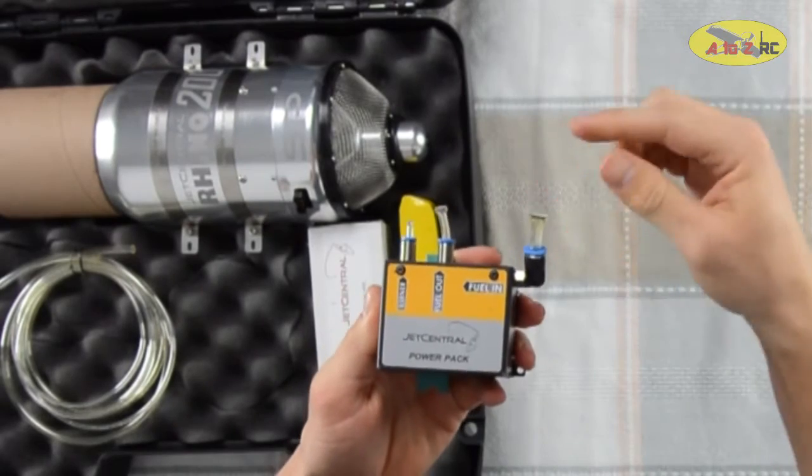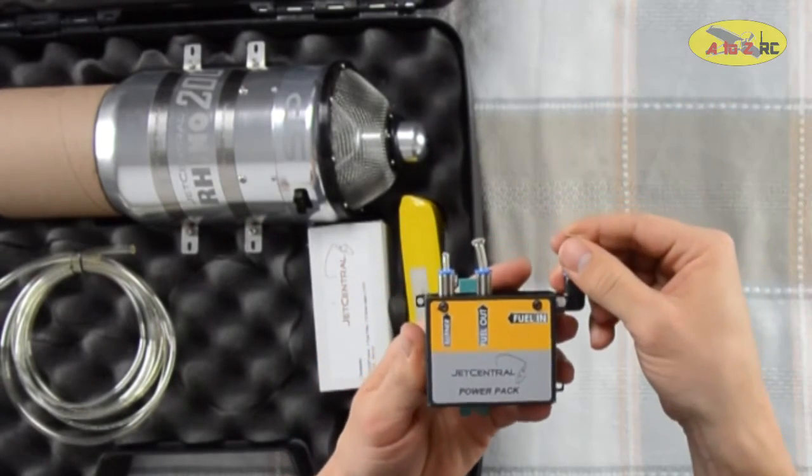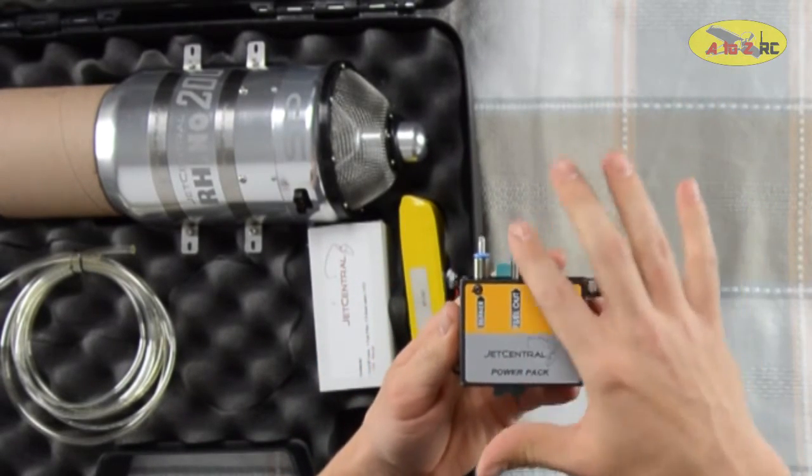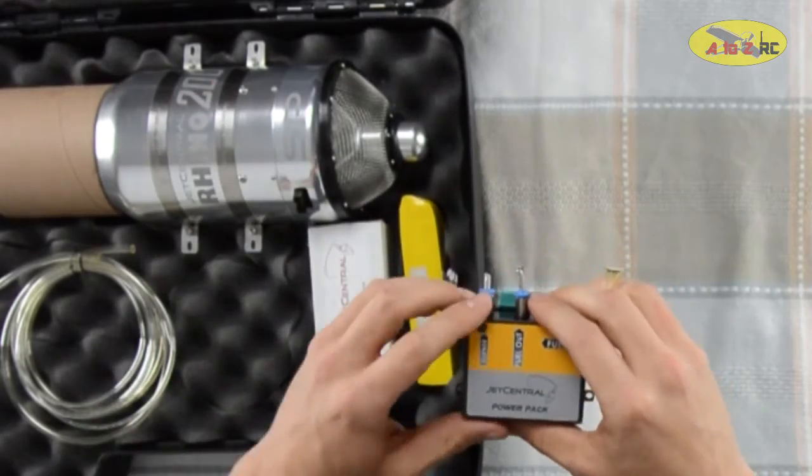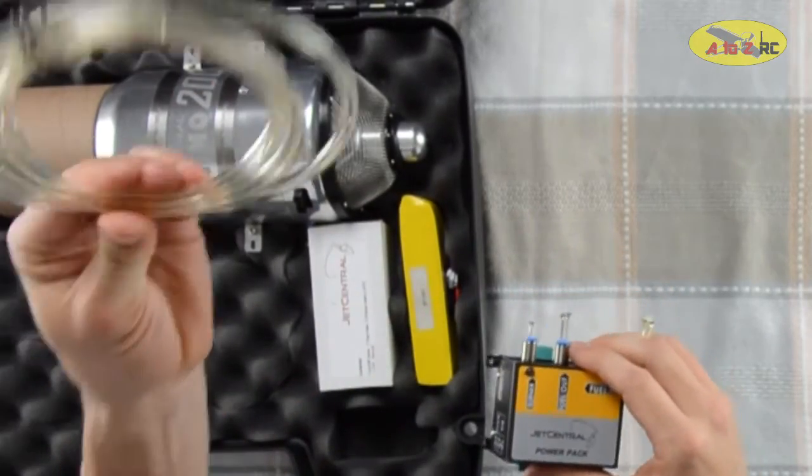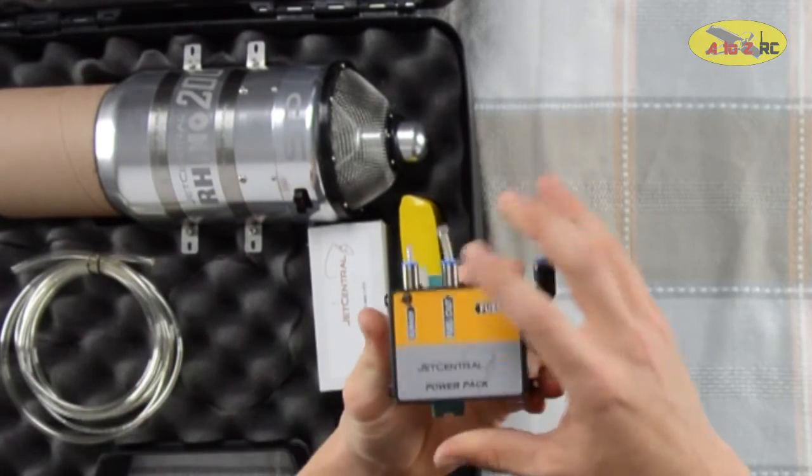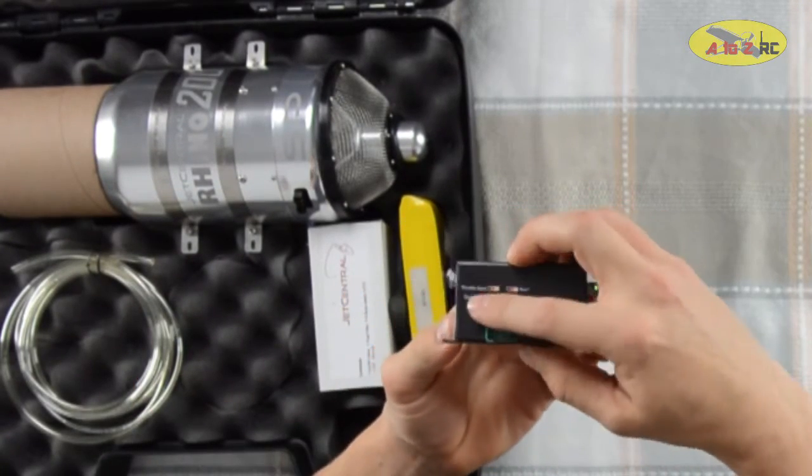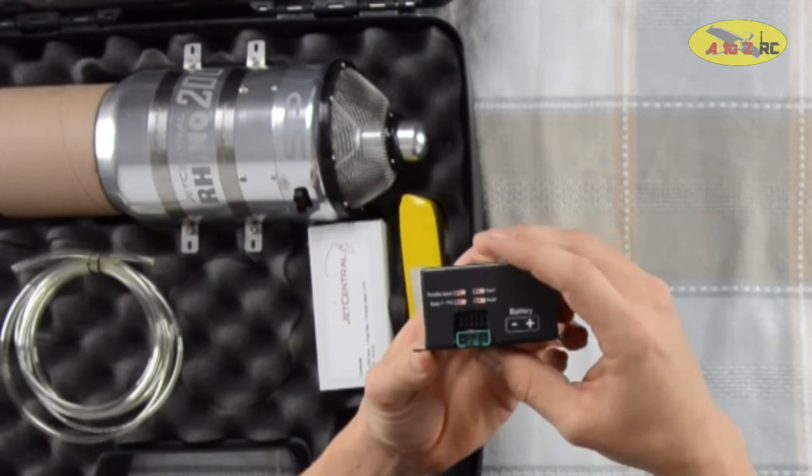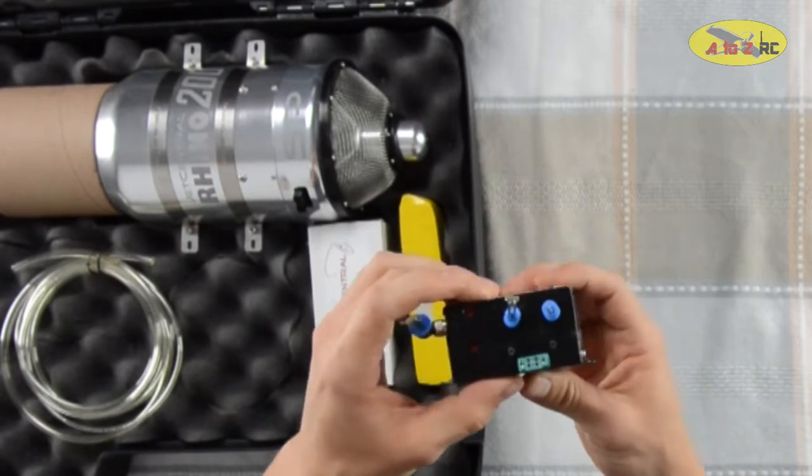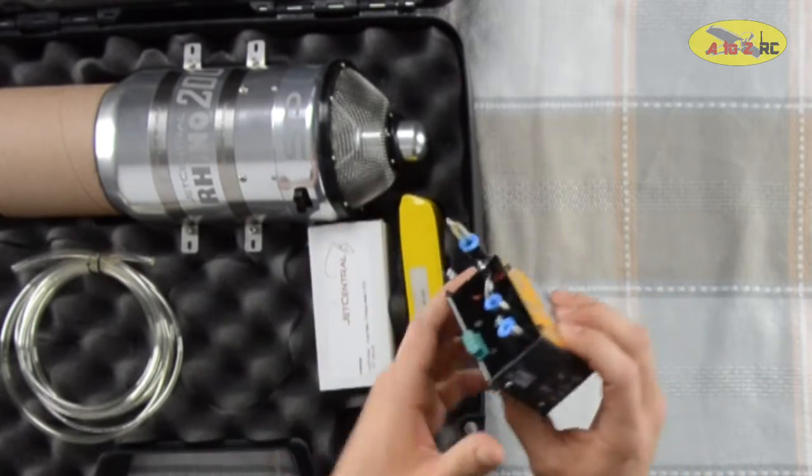Here we have the fuel in coming from your UAT and your fuel out to the turbine and the burner line. Jet Central always sends you plenty of fuel tubing to go with that. Here we have our RX connections and our battery connection, and our S-Bus that will go straight to the turbine as well.